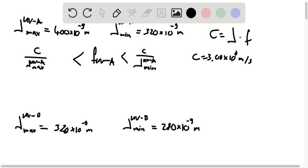then you find that for UVA you have 7.5 times 10 to the power of 14 hertz.